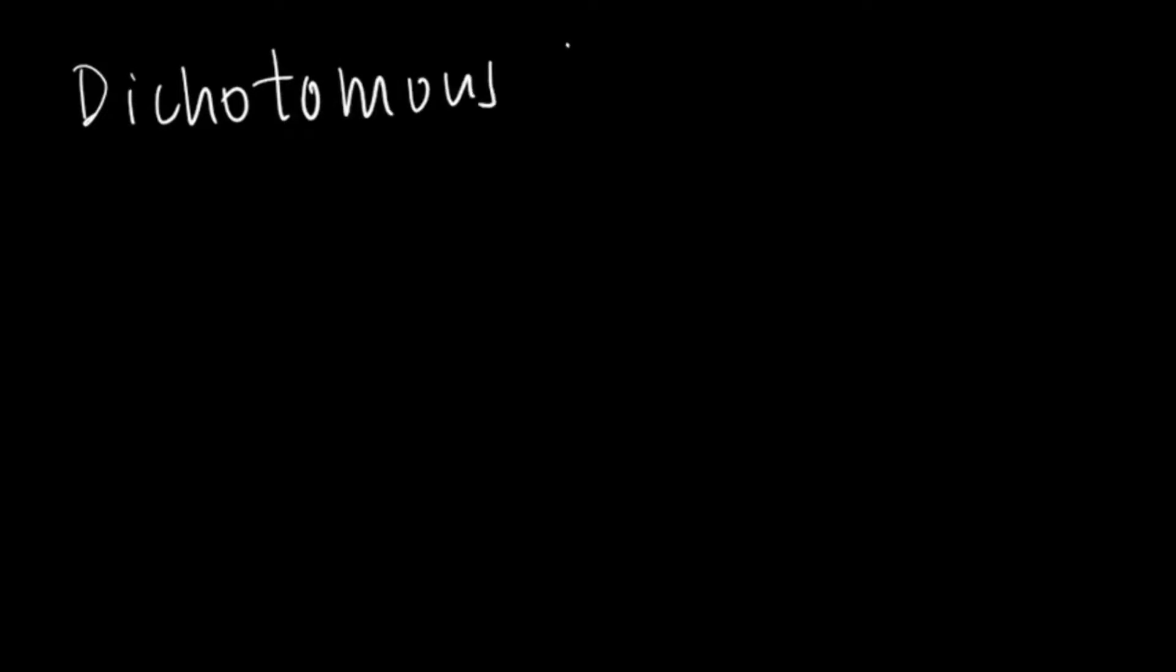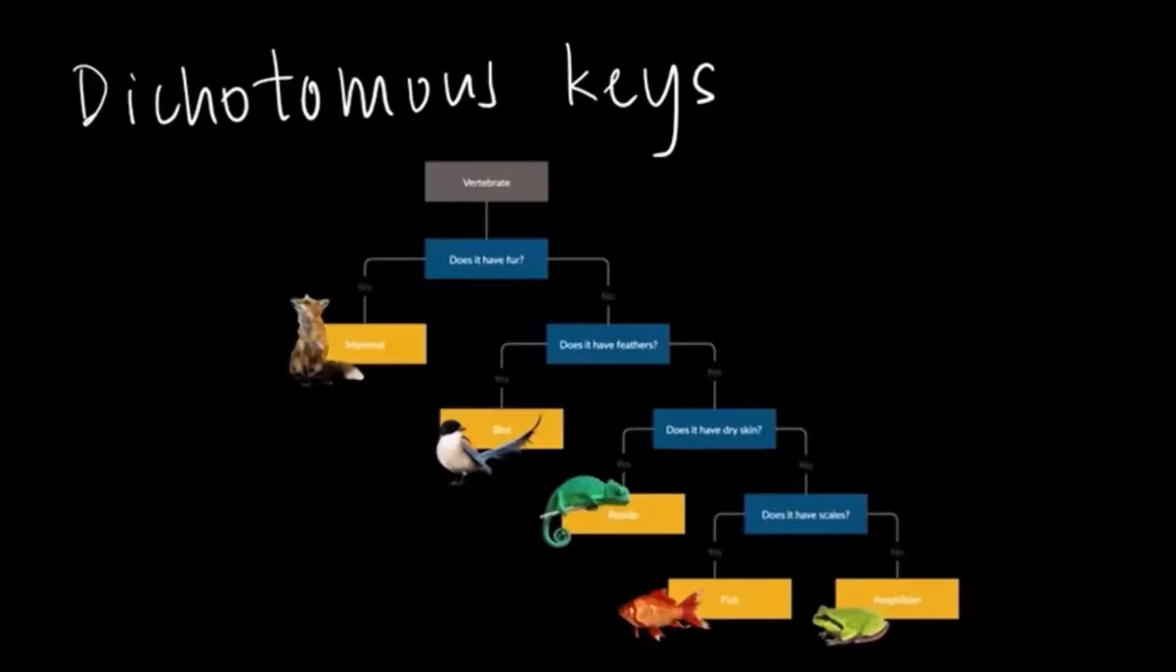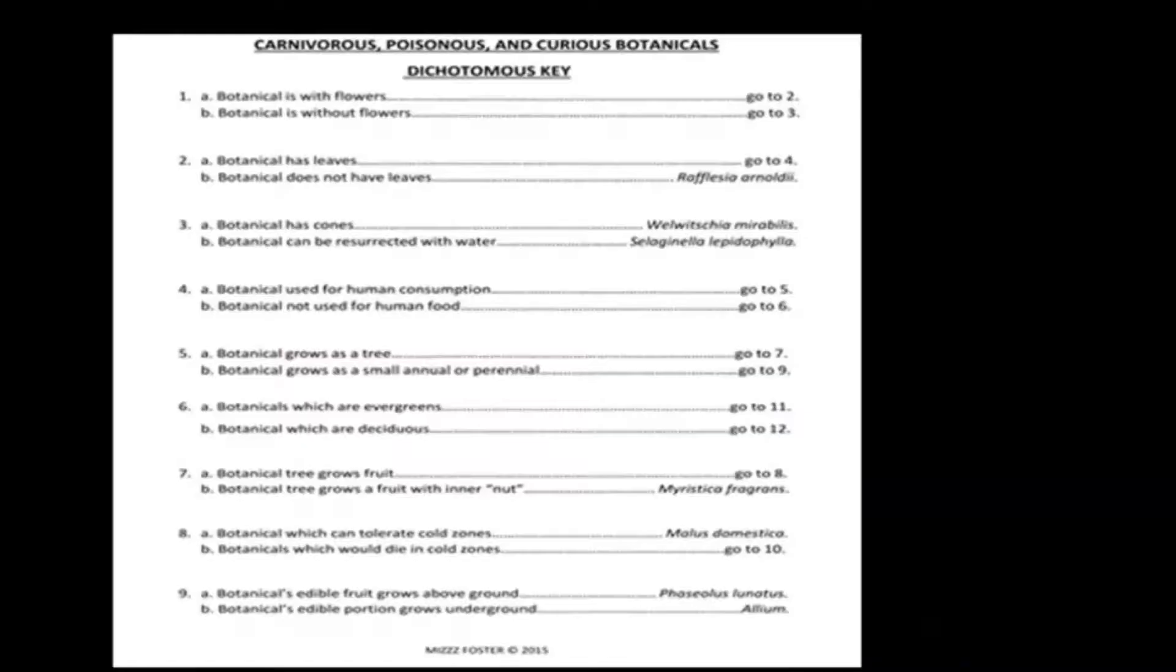A dichotomous key is a tool to help determine the identity of organisms based on their traits, whether do they have fur, feather, etc. This is one example, feel free to pause to have a look at it. And this is also another ensemble of questions presented in another format.